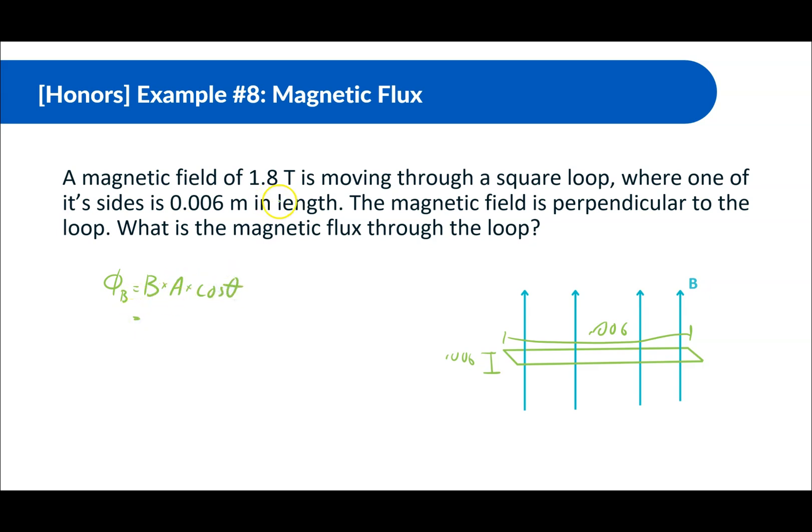So we know that the magnetic flux is equal to magnetic field times area times cosine theta. So the magnetic field is 1.8 Tesla times the area, which is, that's just one side of the length, 0.006, but if we square it, now we have the area, times cosine, and this is going in the same direction as the normal, so that angle is going to be 0.